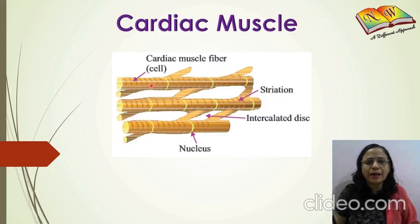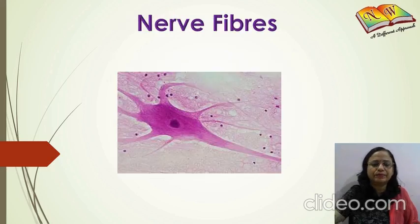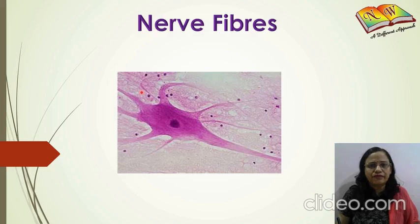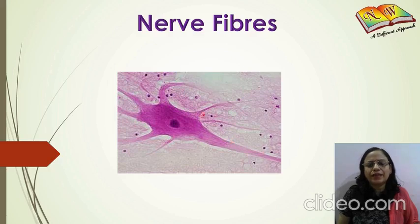This image shows the nerve fibers. Nerve fibers are made up of cells that look like a star-shaped structure with a tail behind it and branchings from the star. Let us discuss in more detail the structure of the nerve cell.